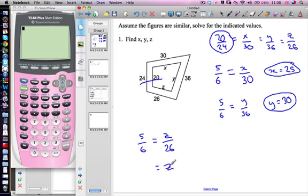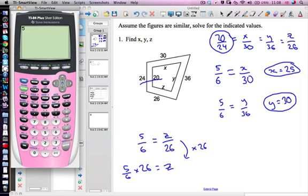And the way I'm going to do that, I've multiplied this side by 26, so I'll do the same over here: 5 over 6 times 26. And let's do it here. 5 over 6 times 26. Enter.